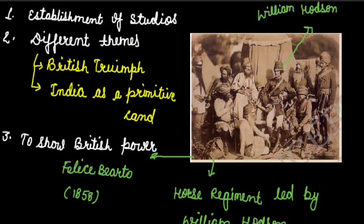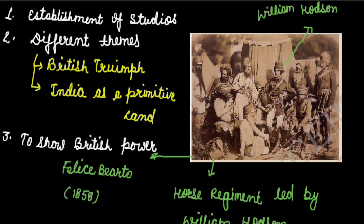Besides these kinds of photographs, Indian photographers used to capture photographs of nationalist demonstrations. By the late 19th century, Indian photographers began taking pictures that offer us a different image of India. They recorded the nationalist marches and meetings as well as the everyday life of the people. The surroundings and environment were also changing the themes and techniques of paintings and photographs. In our next video we will discuss about the search for a national art.